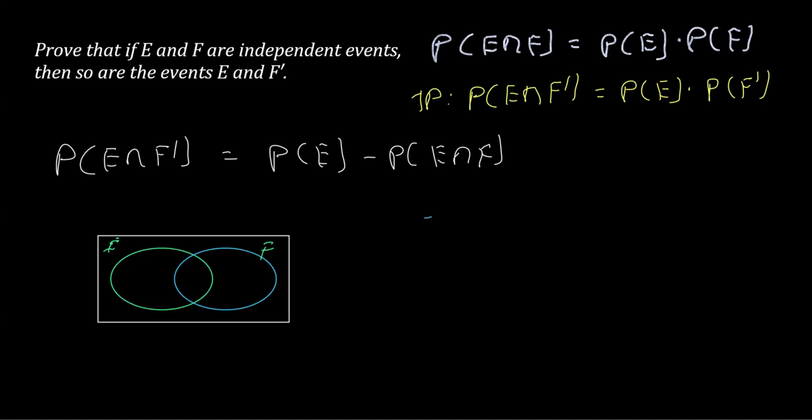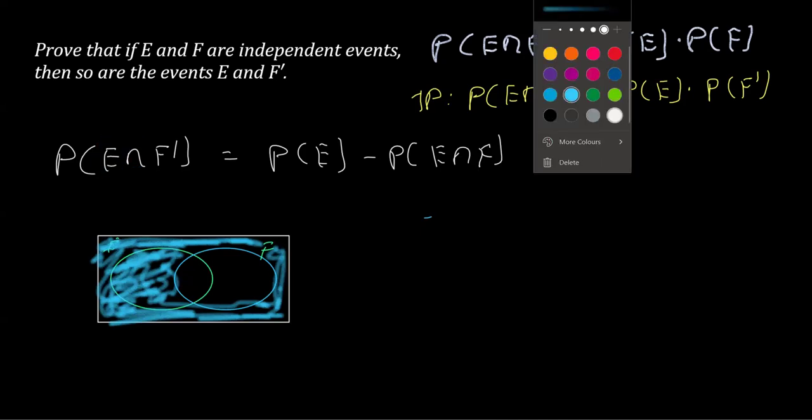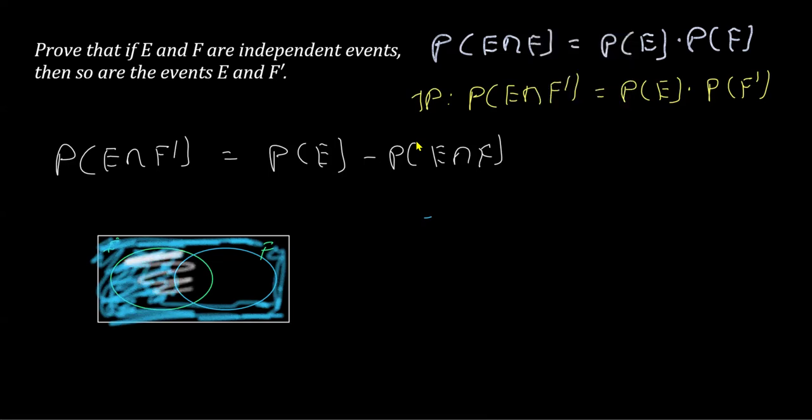So we are looking for E and F', so what is their intersection? If I talk about F', then F' will have all these regions. This is what F' is. And then if we have to look for its intersection with E, what is E here? If I can shade E here, then E is this whole thing, this whole thing is E, right?